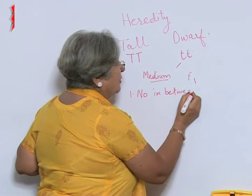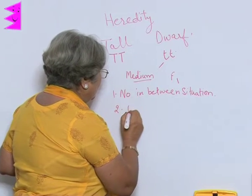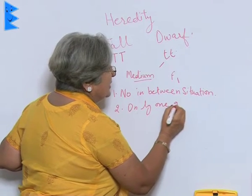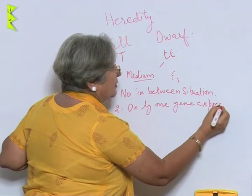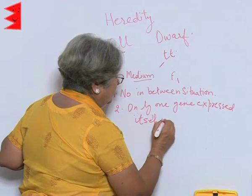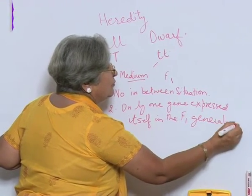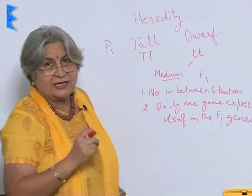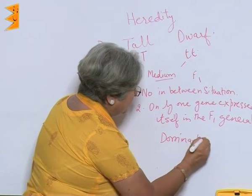Secondly, what he found was that in the F1 generation all plants were tall, which means only one gene expressed itself in the F1 generation. For example, in the F1 generation all plants were only tall; dwarfness was not expressed. On the basis of this, he coined two terms: dominant and recessive.